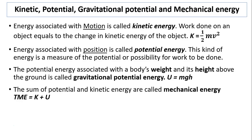Here are the definitions of kinetic energy, gravitational potential energy, and mechanical energy. Kinetic energy is associated with motion: K equals one-half mv squared. Potential energy is associated with position — it's a stored energy. Gravitational potential energy is associated with weight and height, so U equals mgh. We use U now, not PE. The sum of potential and kinetic energy is called total mechanical energy: E equals K plus U.